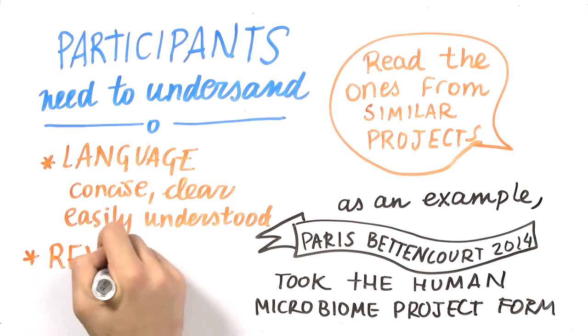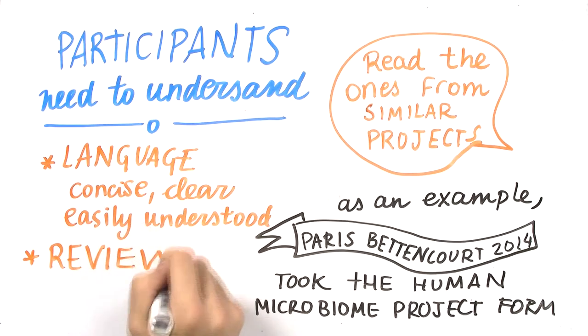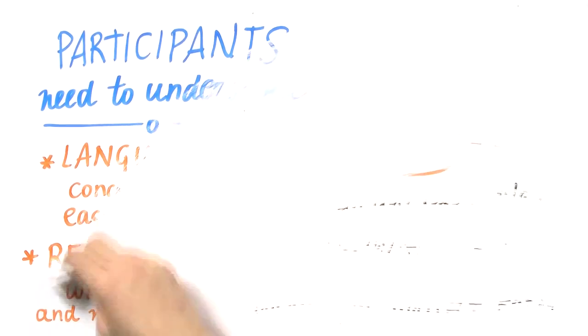Therefore, it is essential to review the consent form with different parties: the iGEM dreamers, the directors, etc. Most effectively, you should give the consent form to one of your friends who have no interest in biology and see if the person would be able to understand the study.